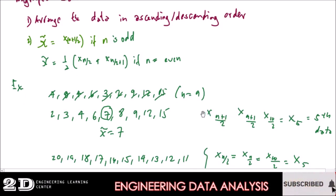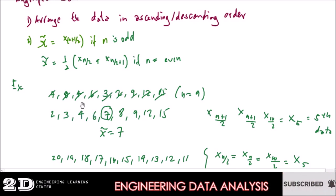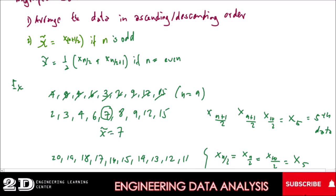We apply the formula x sub (n+1)/2. If your n is 9, then n plus 1 over 2 equals 10 over 2, which is 5. So x₅ — the fifth data — is your median. Counting from the arranged data: 1, 2, 3, 4, 5 — the fifth data is 7, so your median is 7.